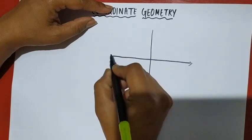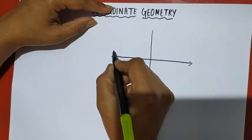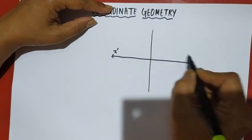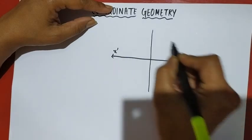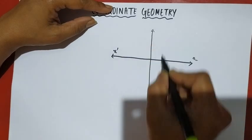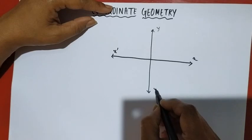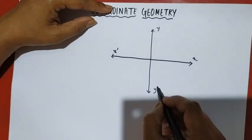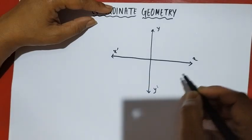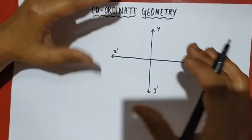On the X axis, the vertical line is the Y axis — the turn point.